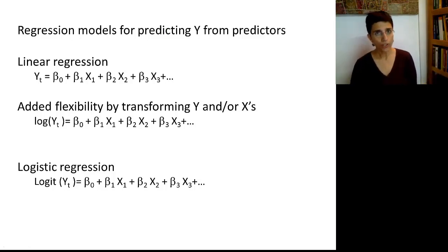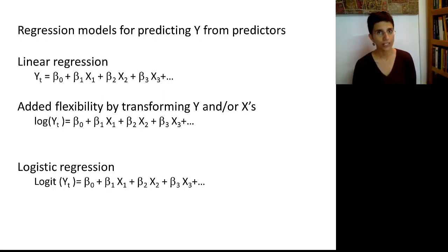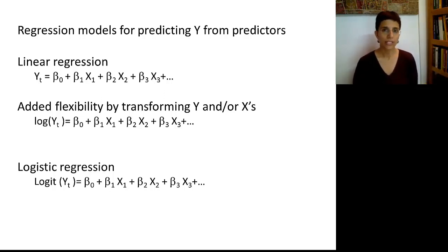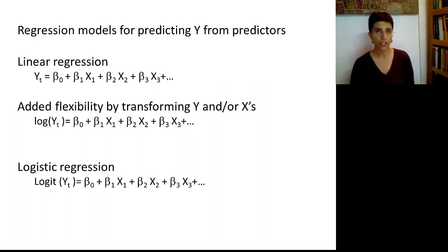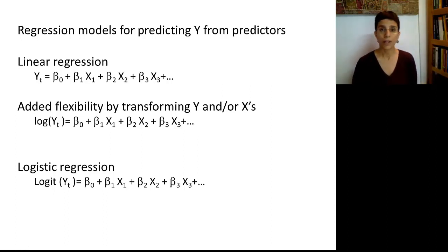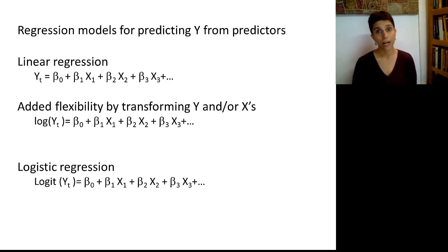Remember regression models. We used linear regression and logistic regression in the context of prediction and classification. When we have a numerical outcome, we used linear regression to predict an outcome y from a set of predictors x's. We did this by specifying a mathematical equation that links the x's to the y. Although the equation looks linear, we know that linear regression can be used to model relationships that are non-linear. We do that by transforming either the outcome or the predictors or both.